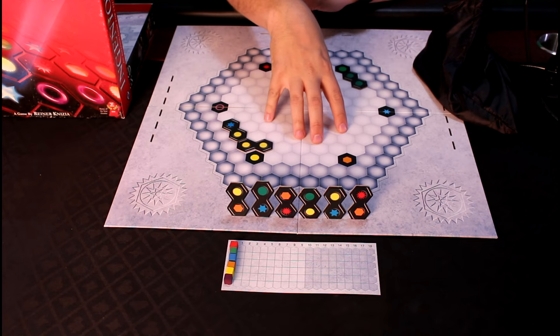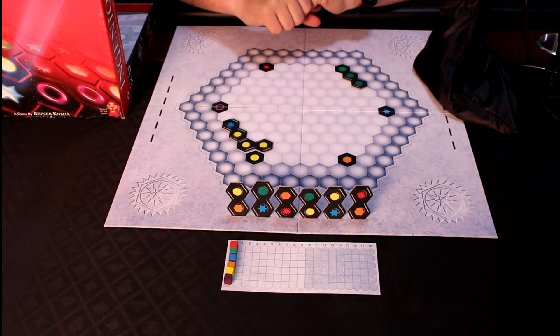If you're playing 2-player, you'll use only the center, 3 players will use light gray, and dark gray for all 4 players.